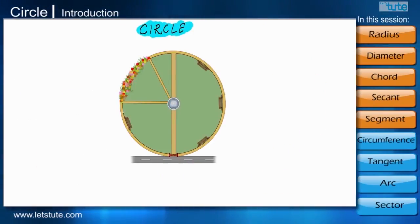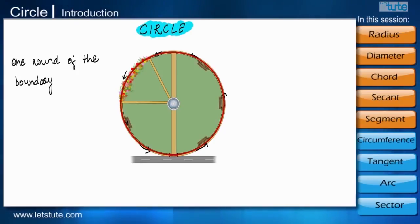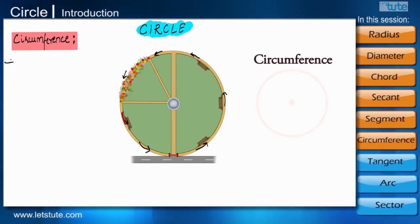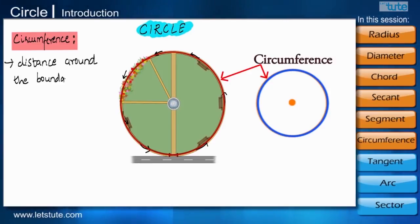Now just imagine, if you are jogging around the boundary of the park and when you complete one round of this boundary, it is known as the circumference of the circular park in which you are jogging. Circumference is the distance around the boundary of a circle.